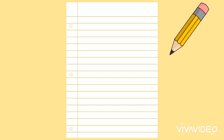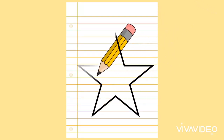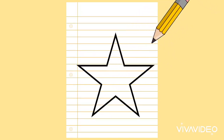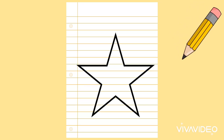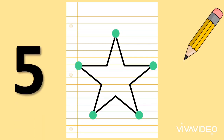What shape am I drawing? A star. And how many corners does a star have? Let's count. One, two, three, four, five. Five corners.